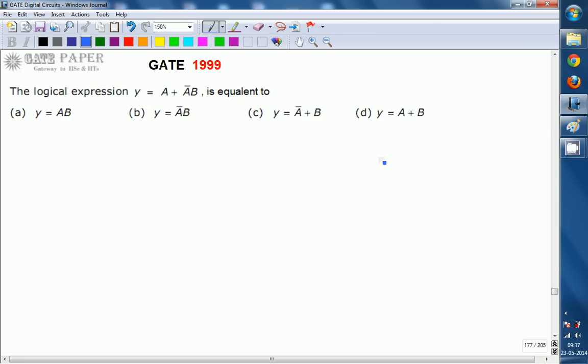Hello, we are discussing GATE 1999 EC paper and the topic is related to digital circuits. The logic expression y equals A plus A bar B is equivalent to: (a) AB, (b) A bar B, (c) A bar plus B, (d) A plus B.